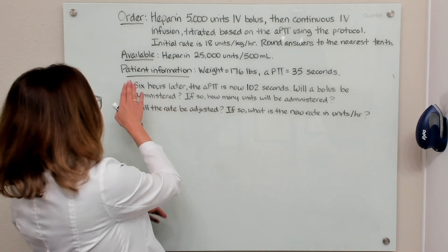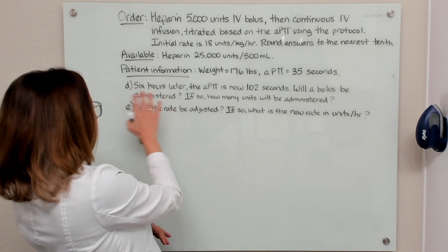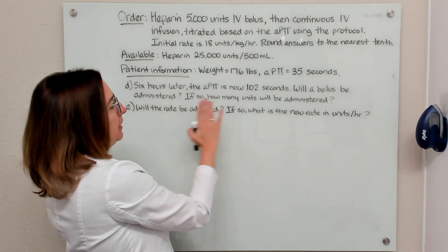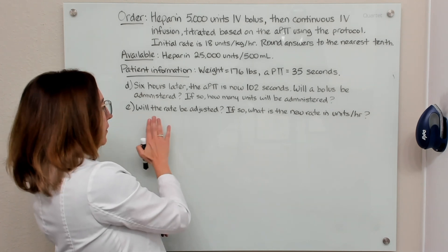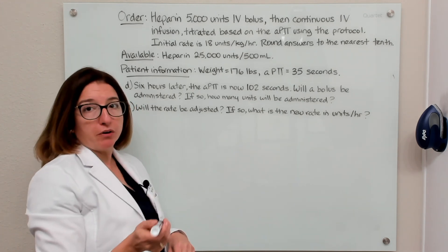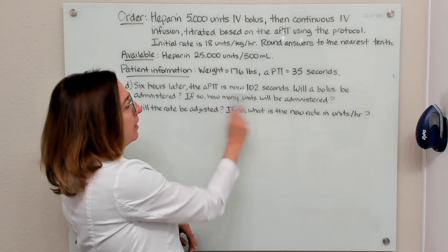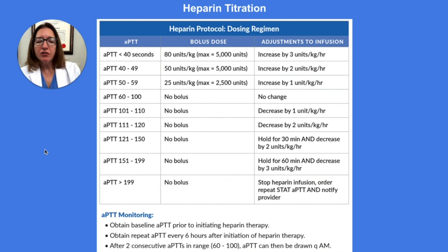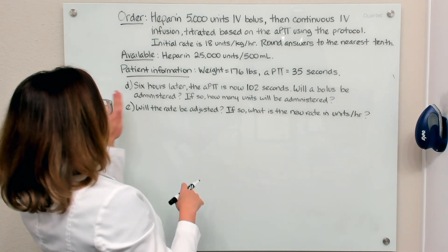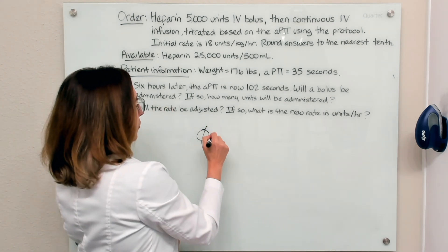Parts D and E: six hours later, the APTT is now 102 seconds. Will a bolus be administered? Looking at the heparin protocol, an APTT of 102 falls within the range of 101 to 110. This means we would not give a bolus to the patient, and we need to decrease the infusion rate by 1 unit per kilogram per hour. So for part D: no bolus will be administered.